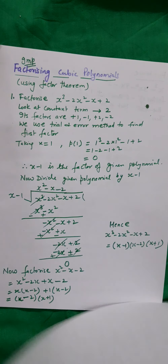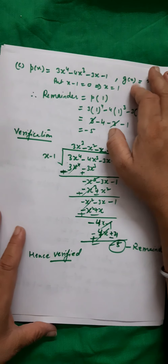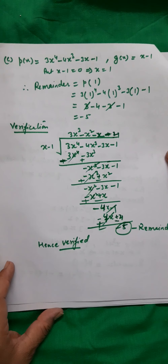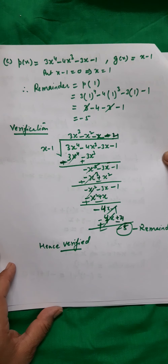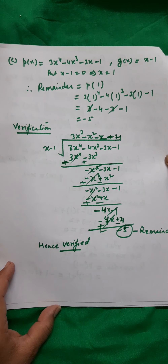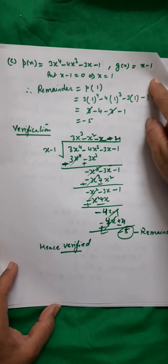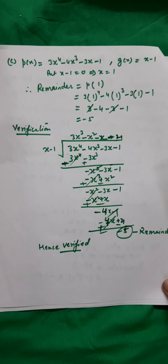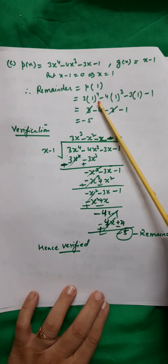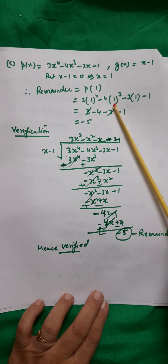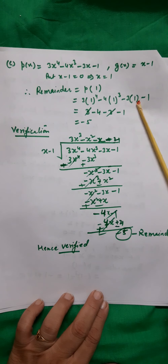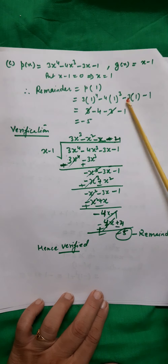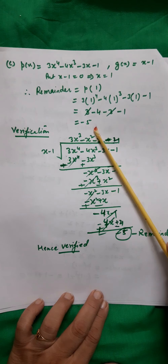Another example: p(x) = 3x⁴ − 4x³ − 3x − 1, divided by g(x) = x − 1. The remainder is p(1) = 3(1)⁴ − 4(1)³ − 3(1) − 1 = 3 − 4 − 3 − 1 = −5. So the remainder is −5.